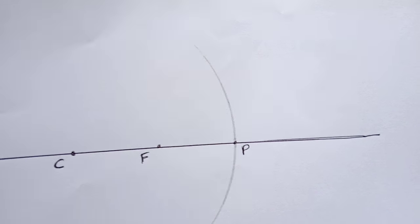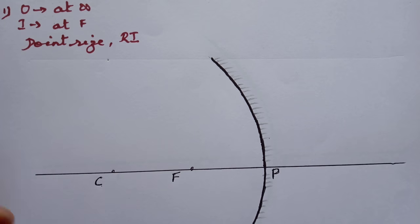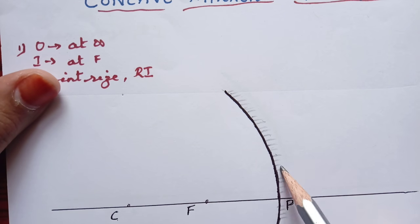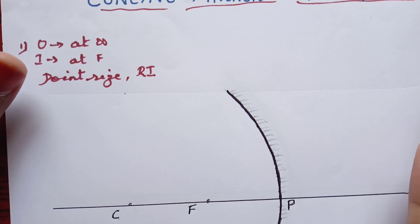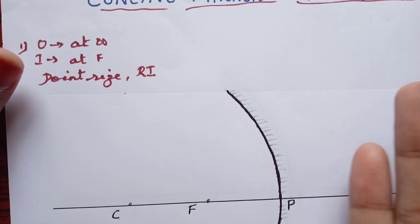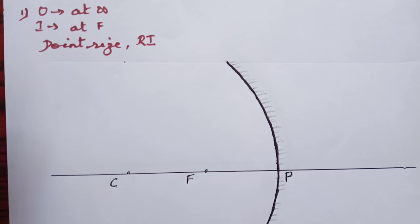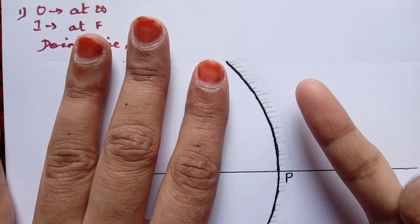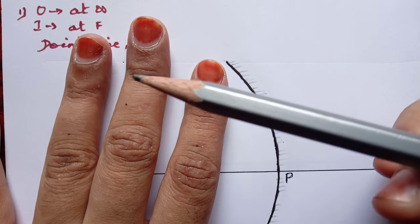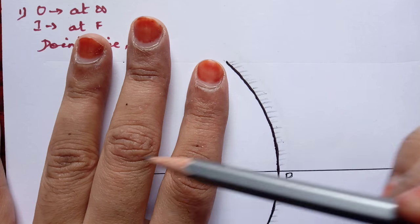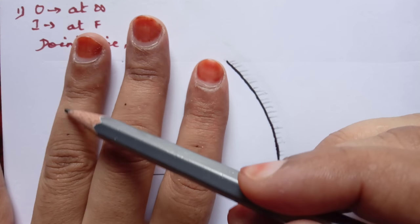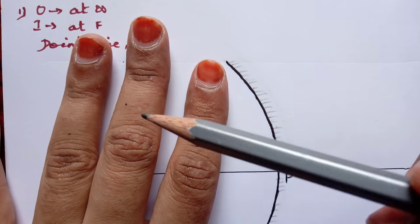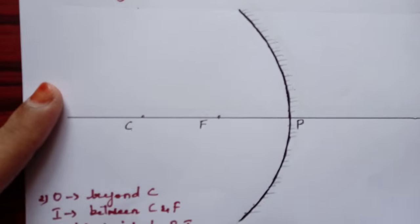I have drawn the basic skeleton for all six diagrams. Also note that you need to add a little shading on the right side for both concave and convex mirror ray diagrams, to show that this part is behind the mirror. Among the six diagrams, the first, third, and sixth have slight differences. The second, fourth, and fifth follow a similar pattern, so I'll do those first.